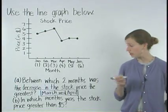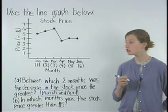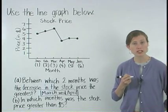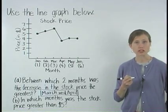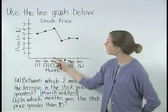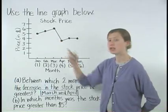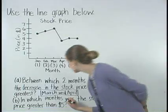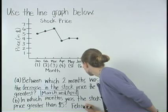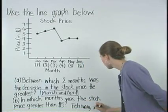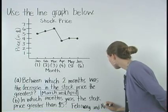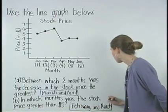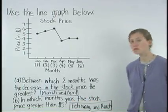To determine in which months the price was greater than $5.00: Notice that the price was $5.00 in January, so any month greater than January will be greater than $5.00. Notice that both February and March are greater than January, so in February and March the price was greater than $5.00.